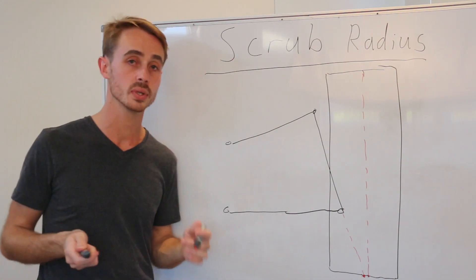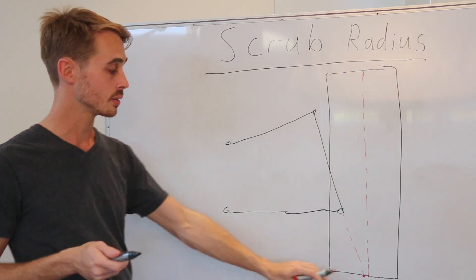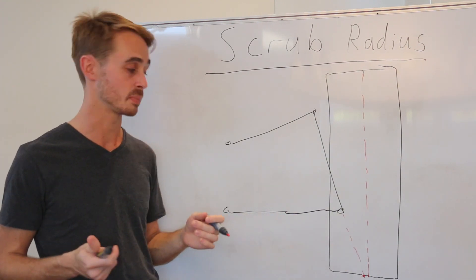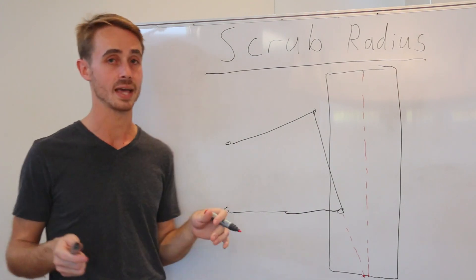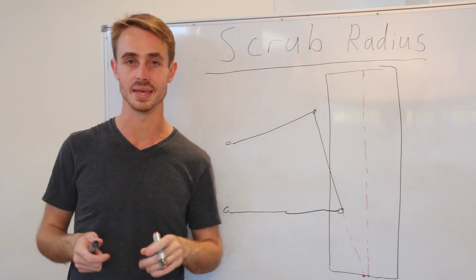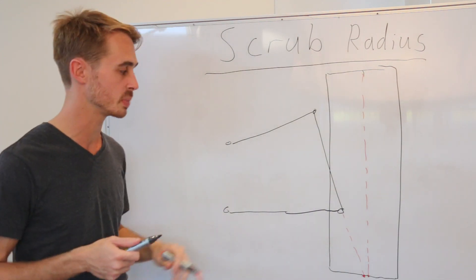As far as what are the consequences of scrub radius, well, handling wise there's not an enormous amount of consequence of scrub radius, apart from the fact that sometimes too high a scrub radius can lead to undesirable tyre scrub in lower speed corners. It's mainly a lower speed corner thing.